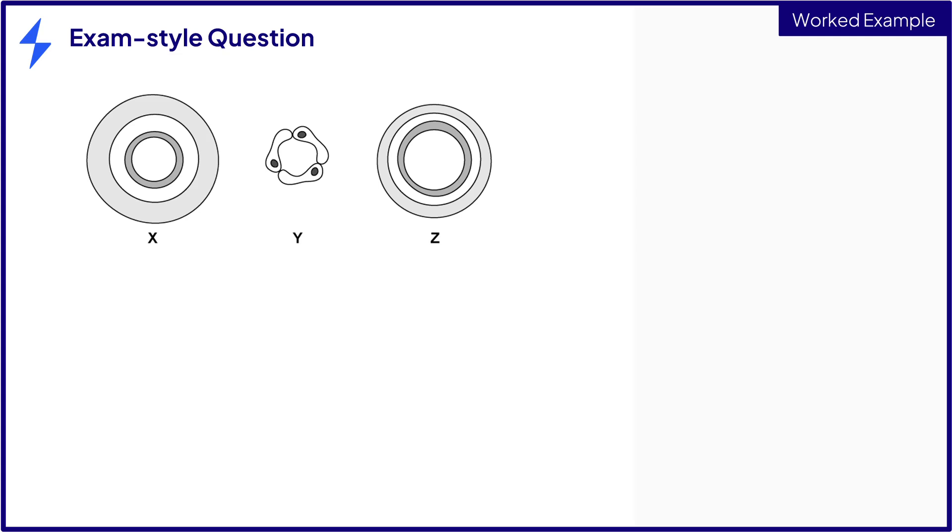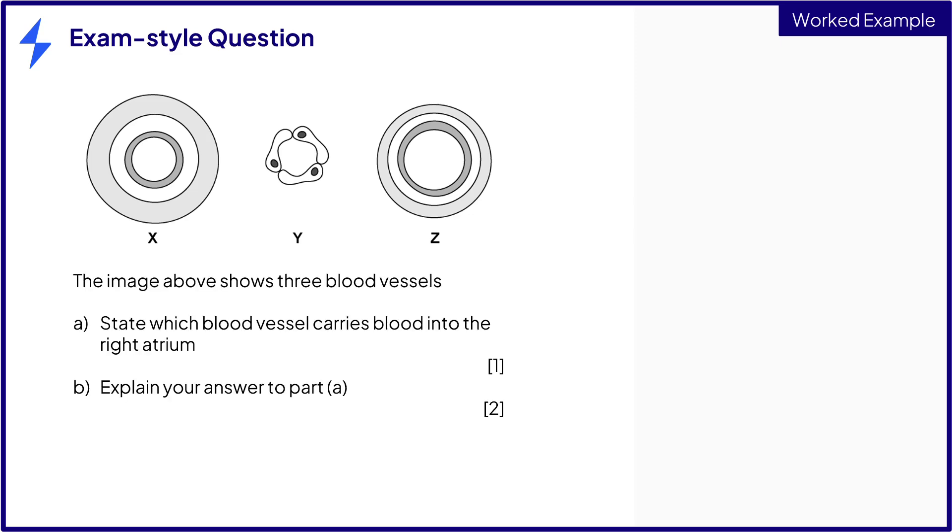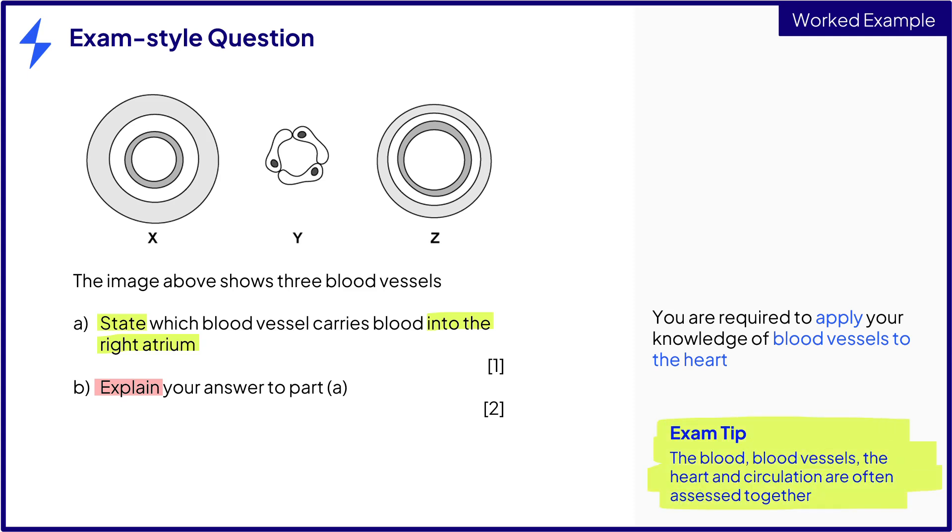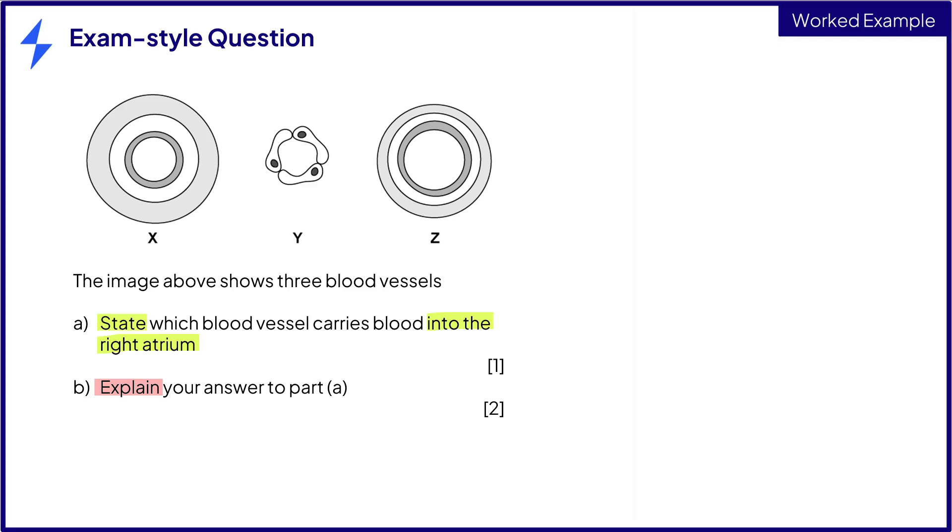Let's take a look at an exam style question. Here you can see a cross section of three blood vessels labeled X, Y, and Z. You are asked to state which vessel is used to carry blood into the right atrium of the heart and then explain your answer. This is a challenging question as you are required to apply your knowledge of blood vessels to the structure of the heart. Examiners will often combine topics such as blood vessels with blood, the heart, and circulation in exam questions.